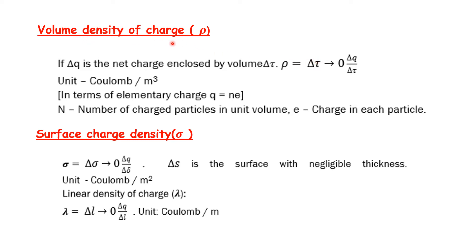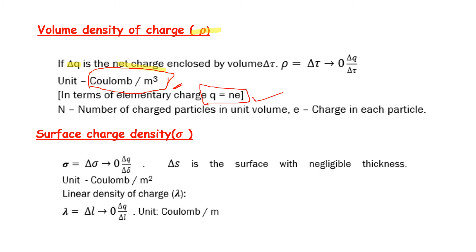Volume Density of Charge: the symbol is rho (ρ). If del q is the net charge enclosed by volume del tau, then rho is equal to del q divided by del tau. The unit of volume density of charge is coulombs per meter cube (C/m³). Physical units are very important.